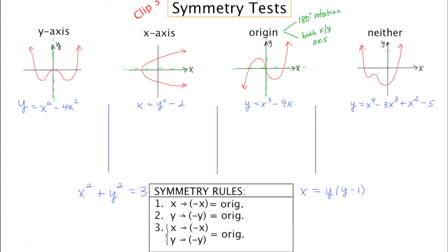Now, to test algebraically: if you're suspicious that a graph has y-axis symmetry and you want to confirm it, you're going to take every occurrence of x and replace it with negative x.